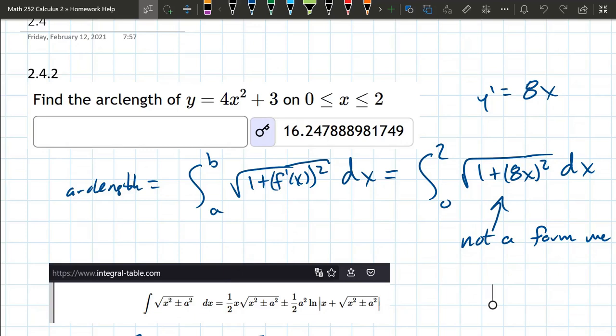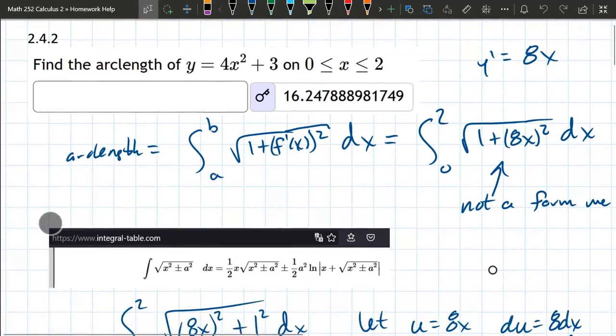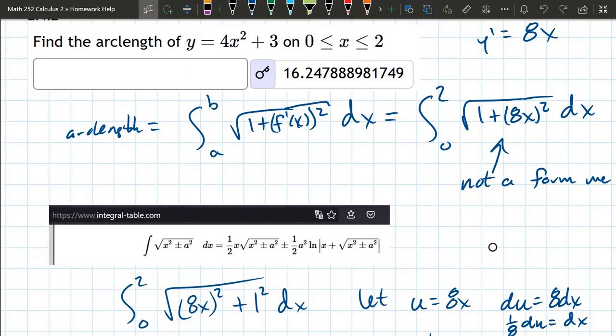It was written in a different order. It was x squared first plus a squared second. So I turned it around and wrote it as 8x squared plus 1. However, this integral formula is for just x squared. What about that stupid 8? So here is where we make a u substitution.